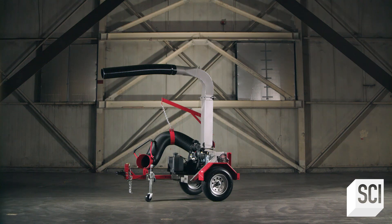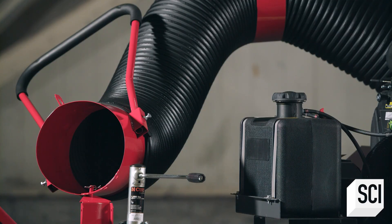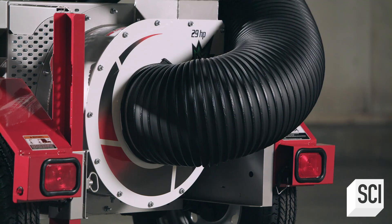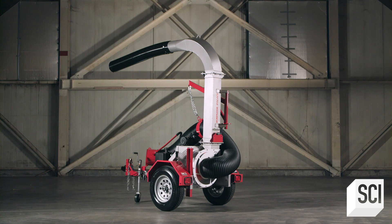A leaf and debris vacuum is powered by a gas or diesel engine. The engine spins an impeller, which creates the suction and also shreds the leaves.